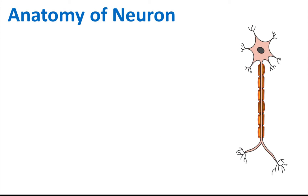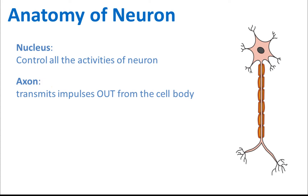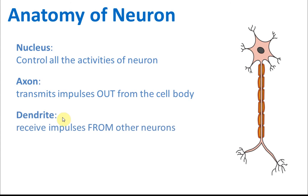We'll study the anatomy of neurons. There are a few parts of neurons that you need to know by name and function. The first one is the nucleus, which controls all the activities of the neuron — it's the control center. We also have axons, which transmit impulses out from the cell body. Then we have dendrites, which receive impulses from other neurons. So dendrites receive impulses, and axons send impulses out.